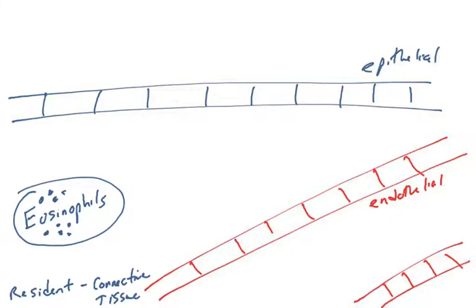Now we're going to cover the two other granulocytes that can also be triggered by IgE: first eosinophils, and then basophils.